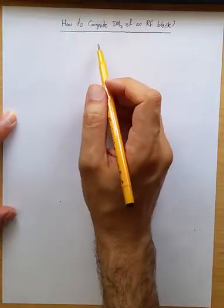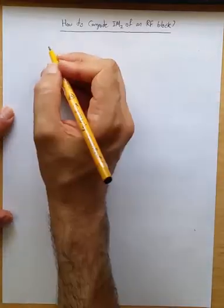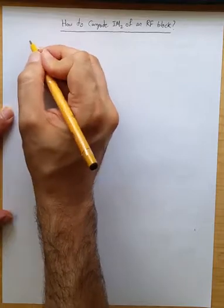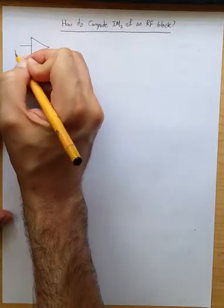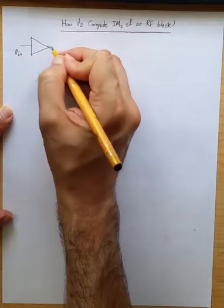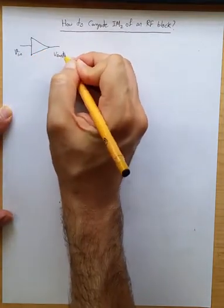Alright, how to compute IM2 of an RF block. So imagine you have an RF block shown here in a simplistic manner with input voltage applied V_in and output voltage obtained V_out.